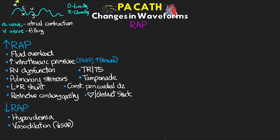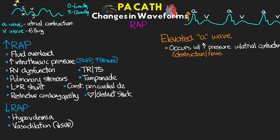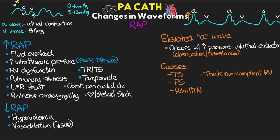When looking at the waveform itself, one thing we can see is elevated A-waves, where the A-wave is even higher than normal. This typically occurs with increased pressure during atrial contraction due to some sort of obstruction or resistance. Causes include tricuspid stenosis, pulmonary stenosis, pulmonary hypertension, a thick non-compliant right ventricle, or RV dysfunction. These all either create an obstruction or add increased resistance, leading to a taller A-wave when the atria contracts.